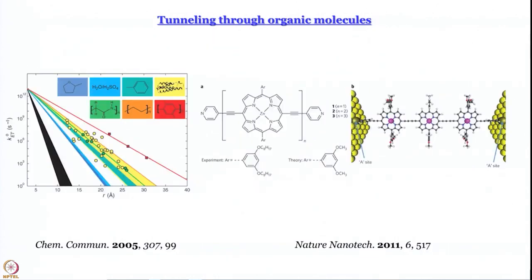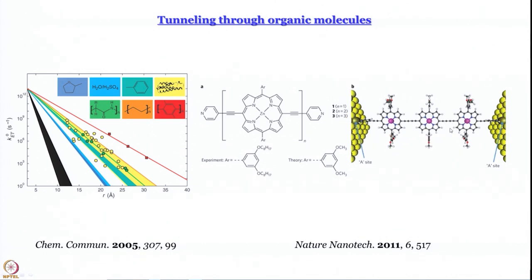Further examples from published papers of the last 10–12 years show tunneling through different organic molecules, and porphyrin chains joined between two gold plates demonstrating how tunneling current depends on chain length. These give important insights into molecular systems. For those who are researchers, I strongly encourage reading these papers to appreciate the technique more fully.